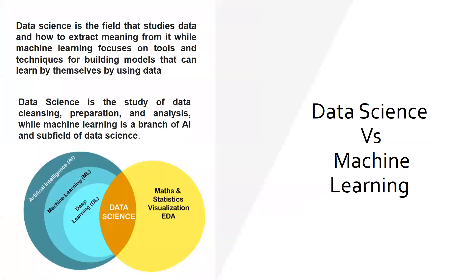Now when we talk about the two terms — data science versus machine learning — data science is basically a field that studies data and how to extract meaning from it, while machine learning focuses on tools and techniques for building models that learn by themselves using data. You decide what kind of data you have, and accordingly decide which technique or tool to use — whether it is an artificial neural network, clustering, or decision trees. It depends on your data. Data science is the study of data cleansing, preparation, and analysis.